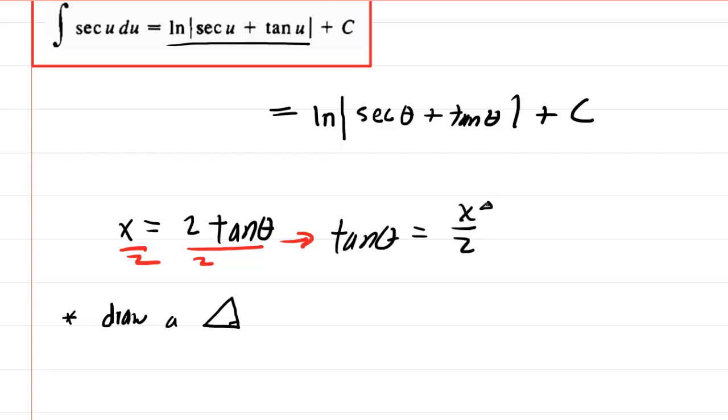We recall that tangent is the ratio of the opposite side over the adjacent side of a right triangle. So what you do is you draw a right triangle. You can put theta down here. Your opposite side, opposite to theta, would be x. And then your adjacent side would be 2.